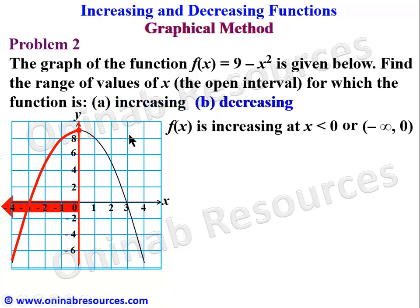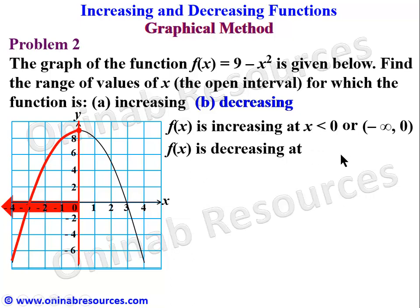For the decreasing function, it is automatically obvious that to the right of x = 0 the function is decreasing. We say f(x) is decreasing at x > 0 — that is, for x = 1, 2, 3, 4, 5 up to positive infinity — stated as the open interval (0, +∞). That is the end of problem two.